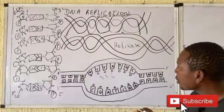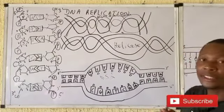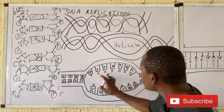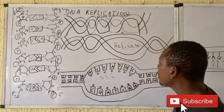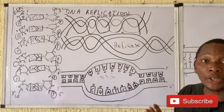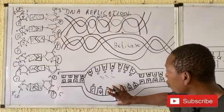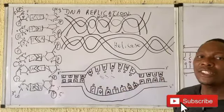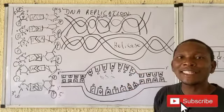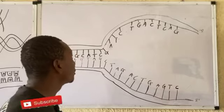This first stage is called the initiation stage. In the next stage, a new DNA strand is synthesized along each template strand to produce two separate DNA molecules — each with one old strand and one new strand. To start the synthesis of the new strand, an enzyme called primase produces what we call an RNA primer.